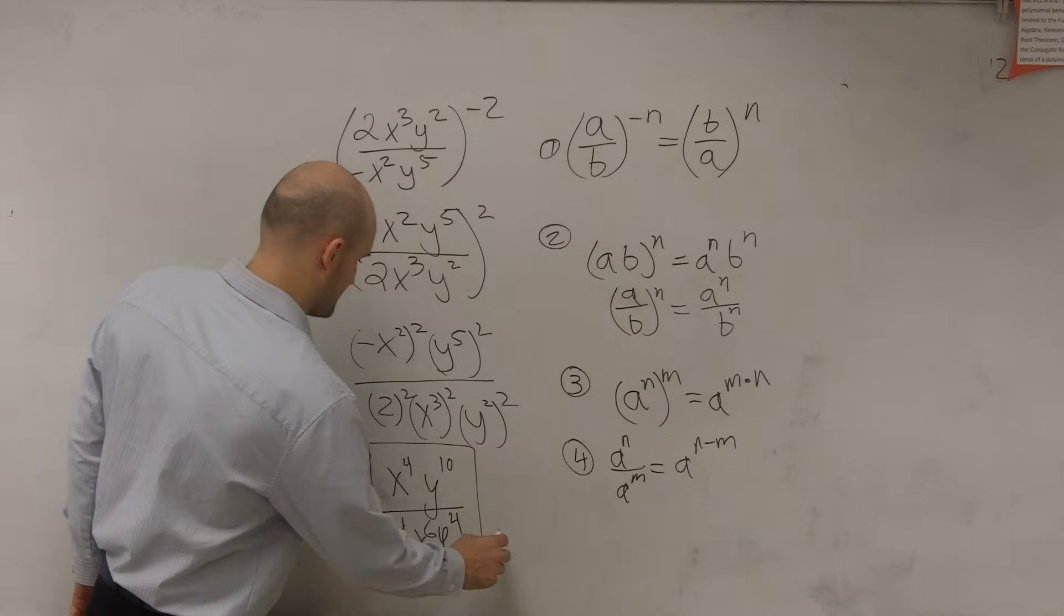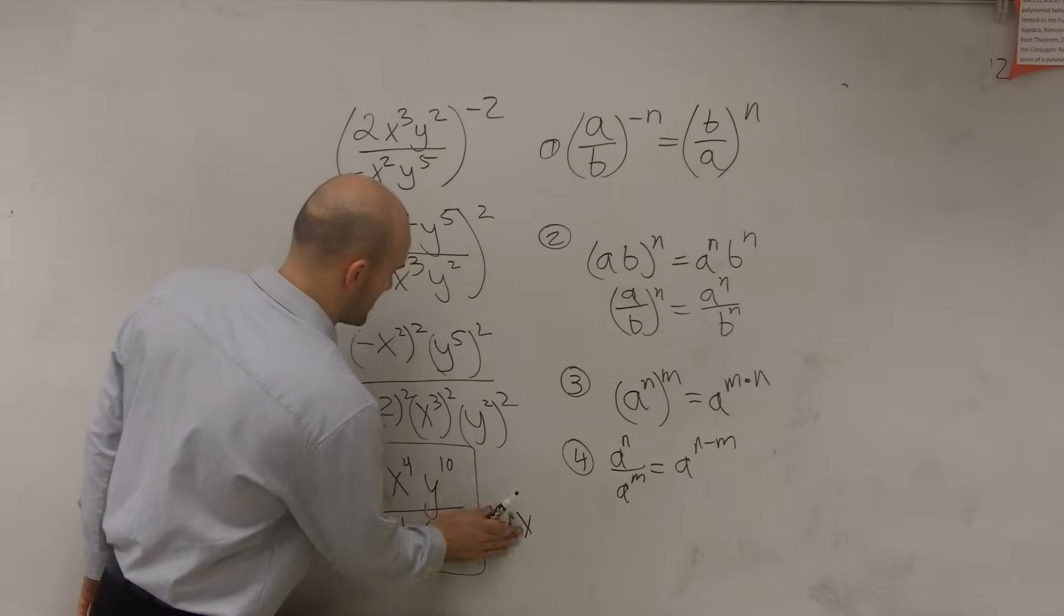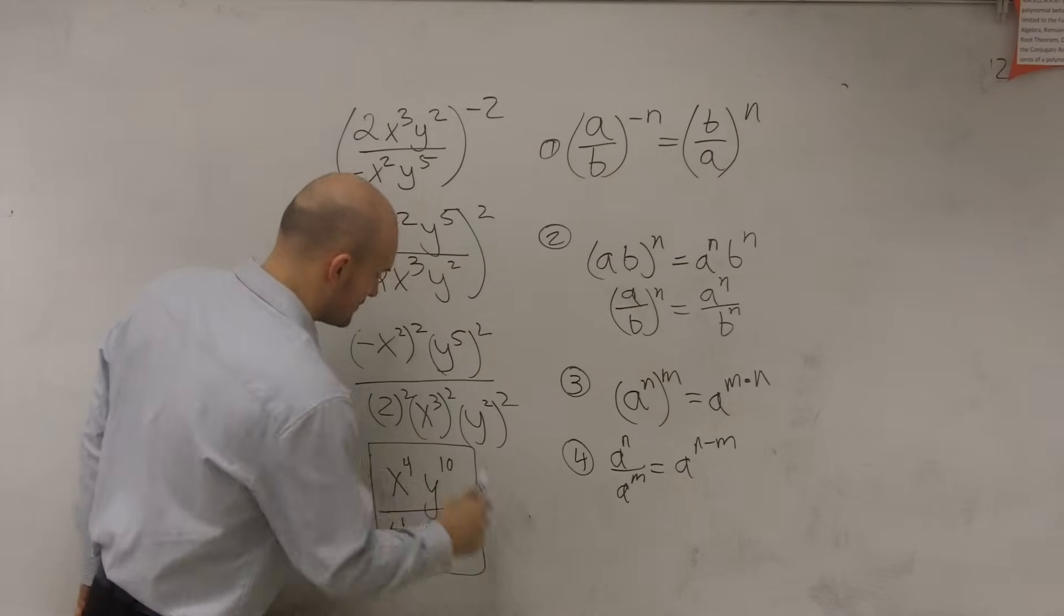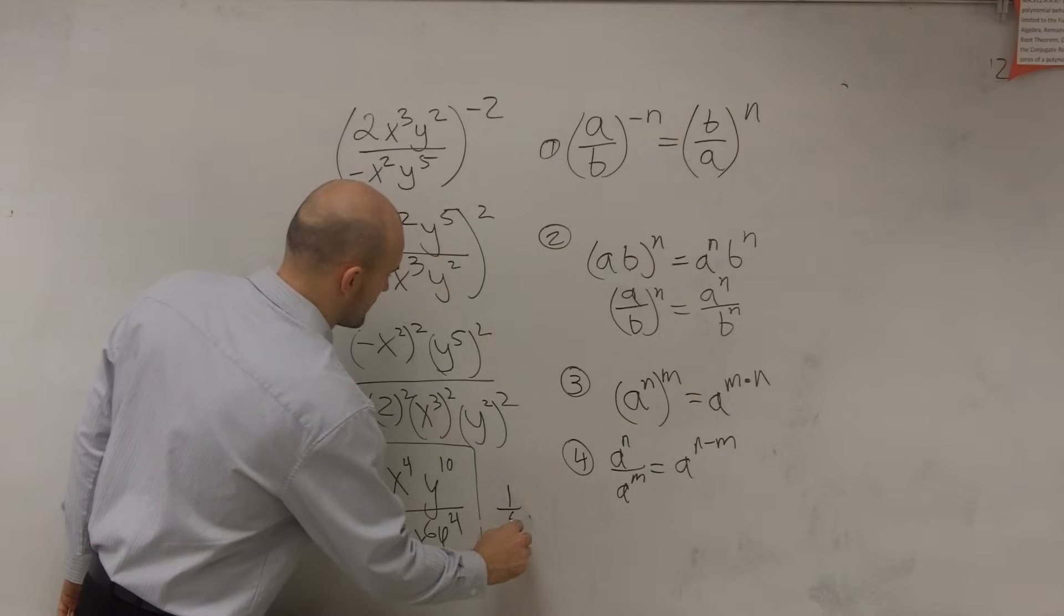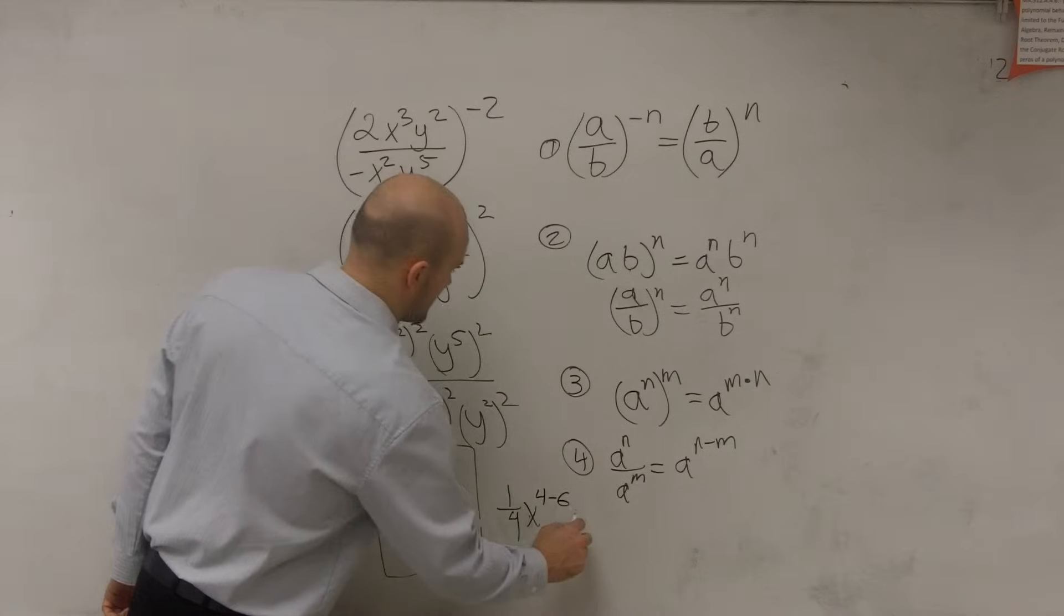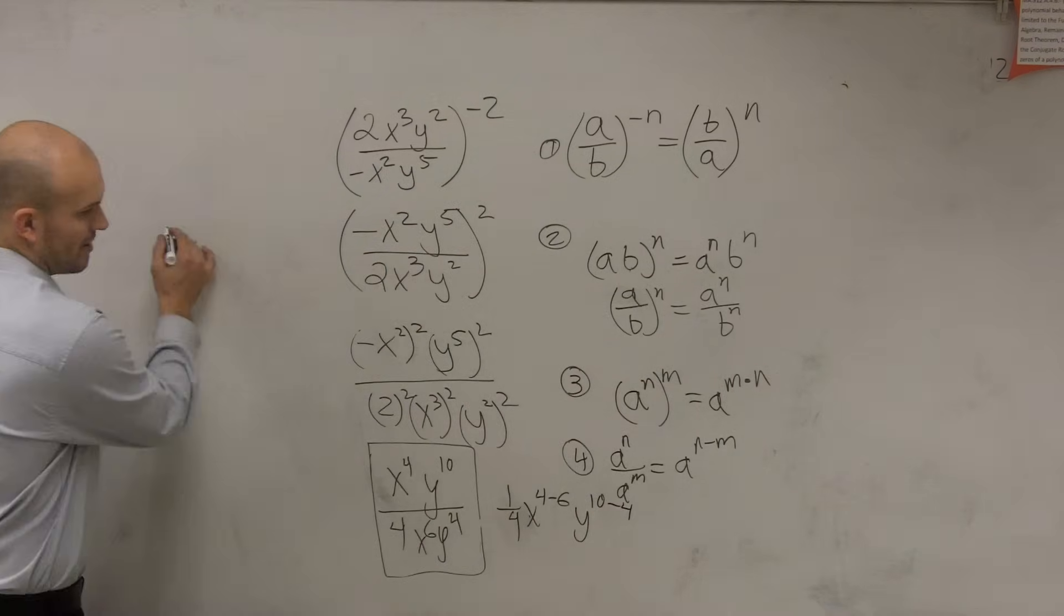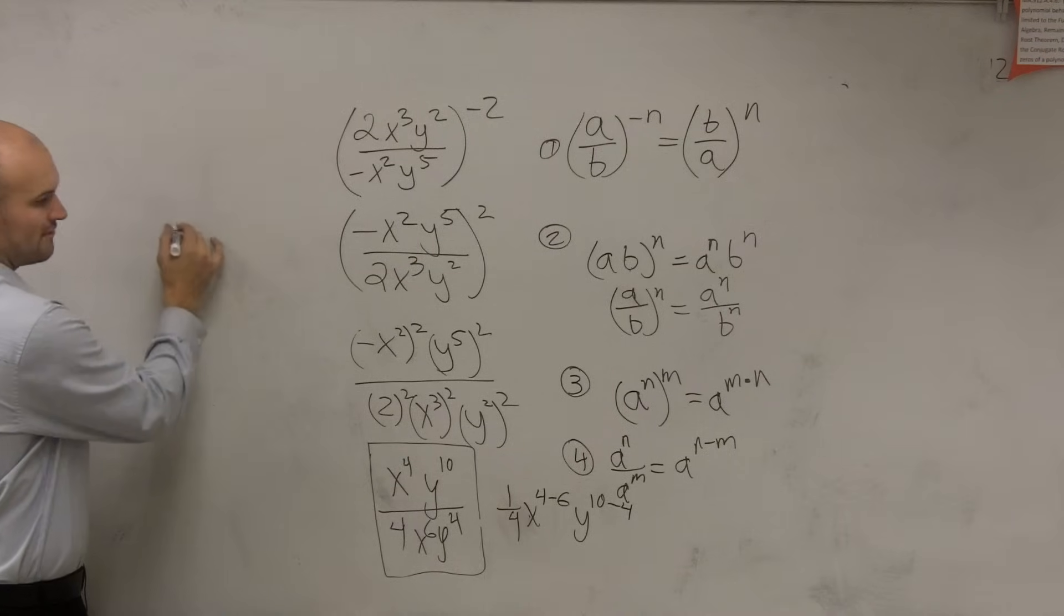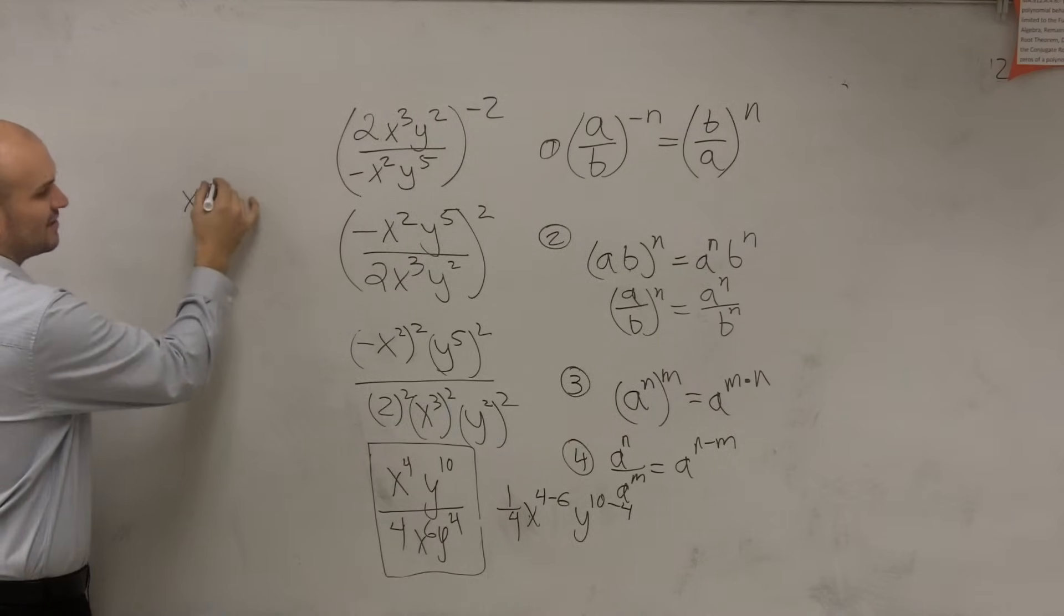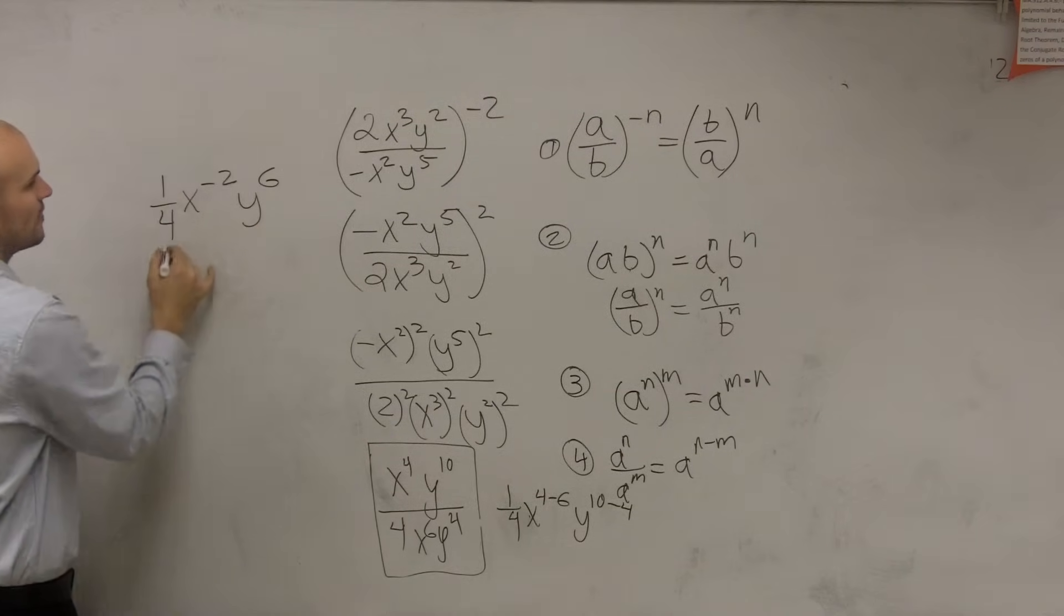So let's simplify these. So x to the fourth divided by x to the sixth, so that's going to give me, so I have 4x to, I'm sorry, 4x to the 4 minus 6, and then y to the tenth minus 4. Well, let's go and write my answers back over here.